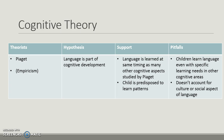Cognitive theory is Piaget, leaning more towards the empiricism side of the spectrum. The hypothesis is that language is part of cognitive development. It's supported by the idea that language is learned at the same timing as many other cognitive aspects Piaget studied, and that children are predisposed to learn patterns. The issue is that children learn language even when specific cognitive deficits exist, and it doesn't account well enough for the cultural or social aspects of language.